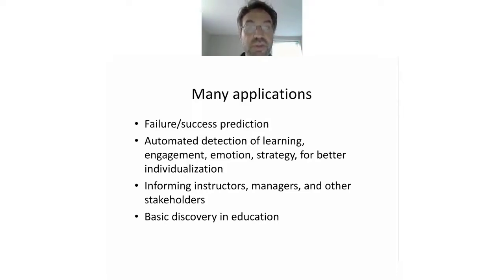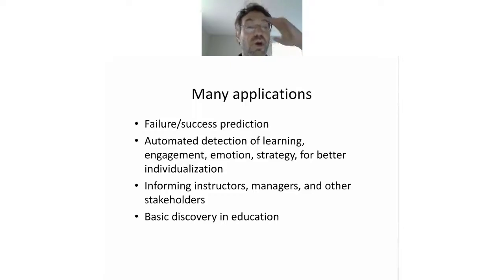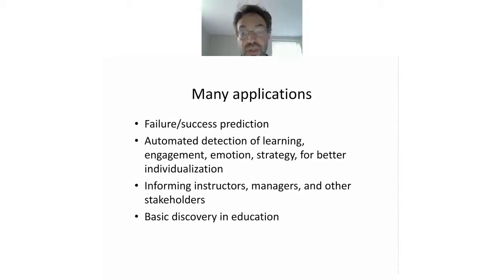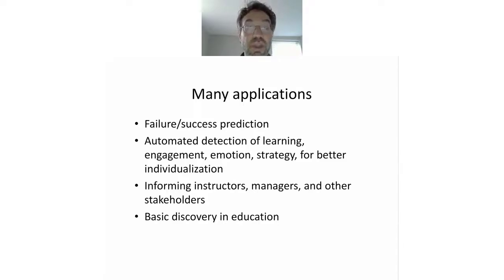Four that I think are particularly key. The first is prediction of student success or failure. Second is automatically detecting whether a learner has learned, whether they're engaged, what their emotion is, and their strategy — for better individualization. A third is informing instructors, managers, and other stakeholders about what's going on. And a fourth is basic scientific discovery, which promotes better learning in the long term.